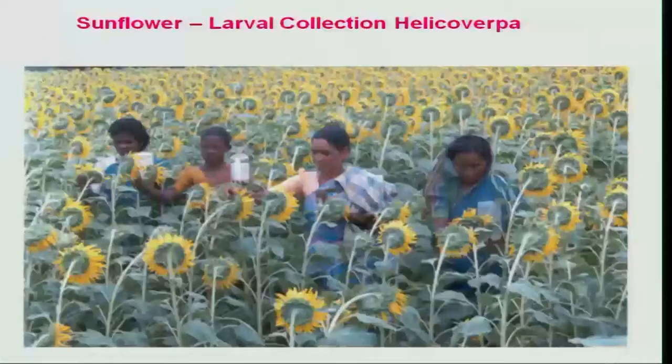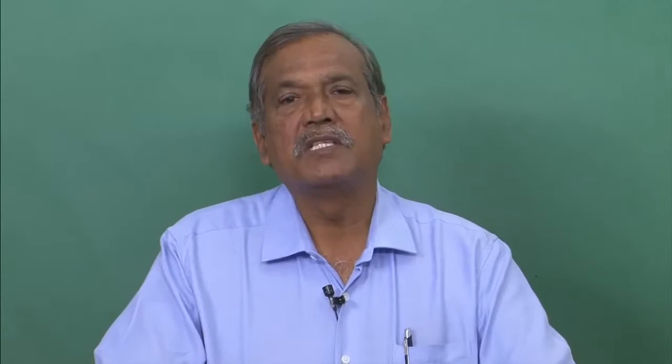Similarly, in the case of sunflower, which is another important crop, Helicoverpa is a major pest particularly during the flowering stage, and it feeds on the developing grains. If labor is available easily and if it is economical, then the larval collection of grown-up Helicoverpa larvae is the best strategy to reduce the pest population.